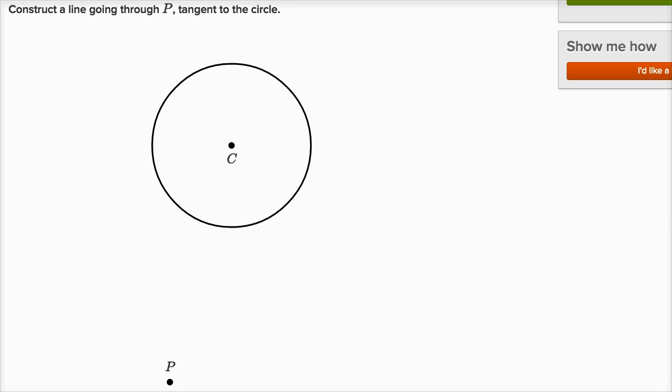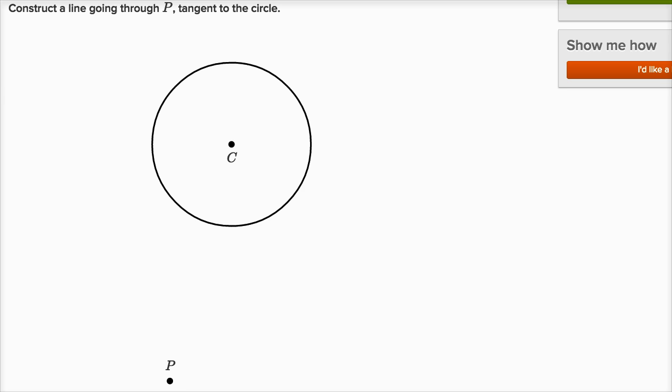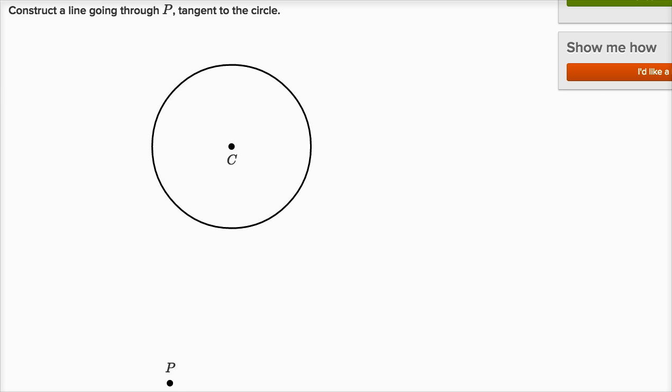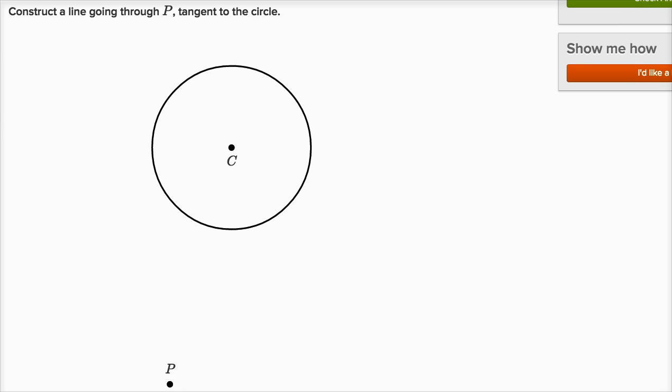So we want to draw something like, and actually let me get my straight edge out. So my straight edge, and I have my controls up here. This is on the Khan Academy exercise, constructing a line tangent to a circle. So let me add a straight edge.